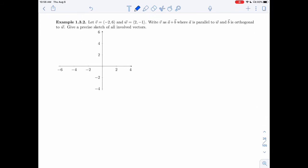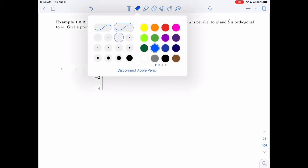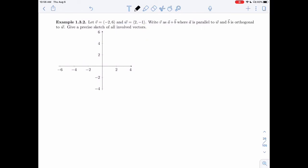In example 1.3.2, now we're looking at doing this algebraically. In the definition and in the theorem, we're given formulas. We want to use them here. We'll also give a sketch to make sure everything fits with our ideas of what a projection should be. So I'm given V = (-2, 6) and I'm given a vector W, which is (2, -1).